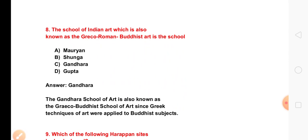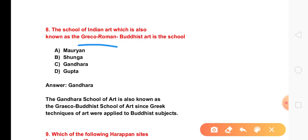The next question is: the school of Indian art which is also known as the Greco-Roman Buddhist art. The Gandhara school of art is also known as the Greco-Buddhist school of art, since Greek techniques of art were applied to Buddhist subjects.